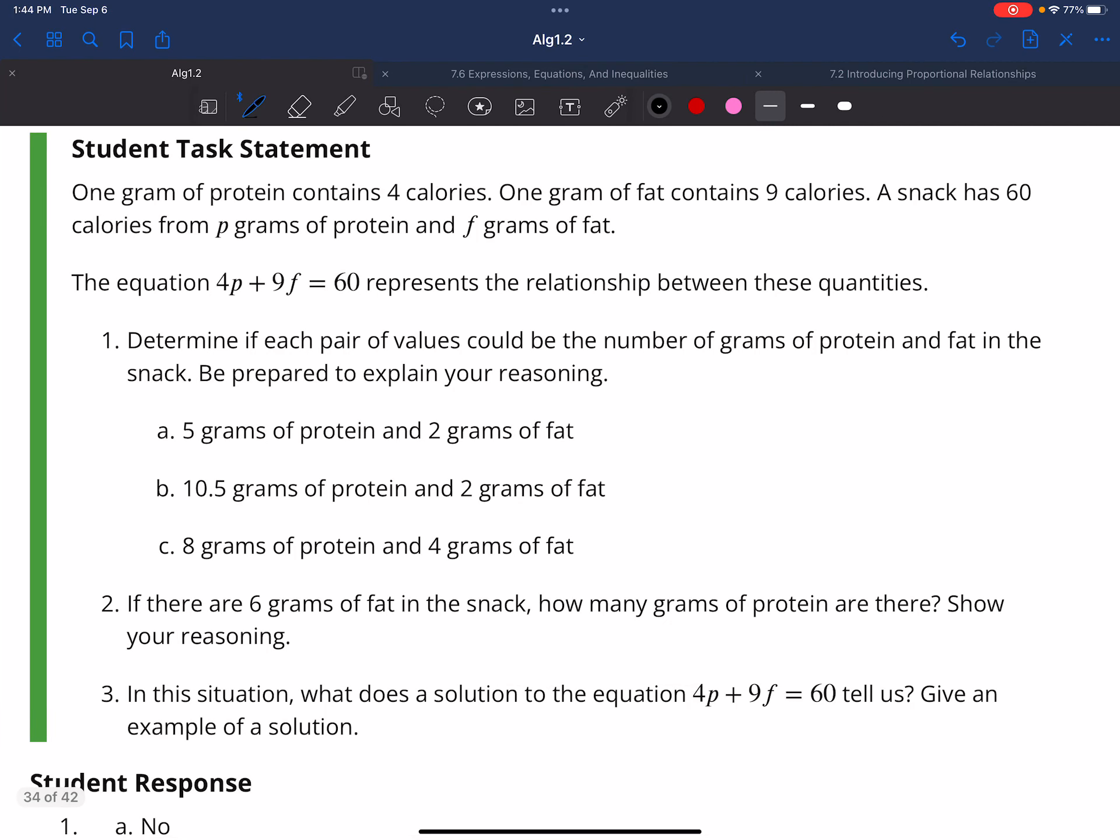All right everyone, let's take a look at this problem here. It says 1 gram of protein contains 4 calories, 1 gram of fat contains 9 calories. A snack has 60 calories from P grams of protein and F grams of fat.